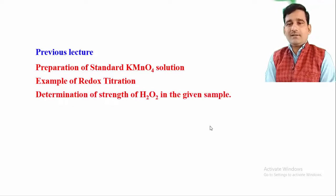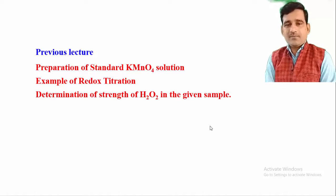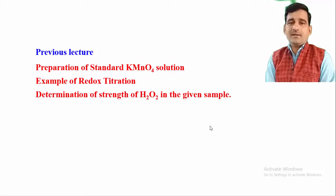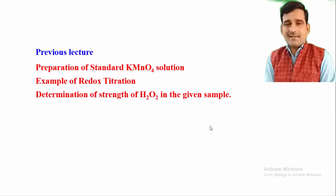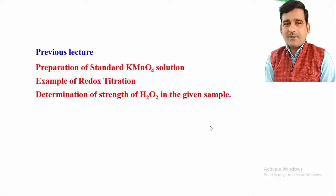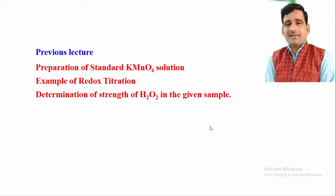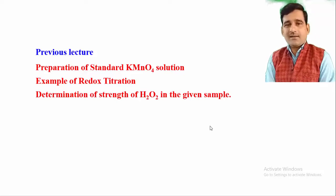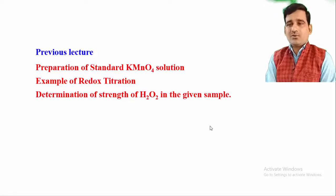In that example, we determined the strength of H₂O₂ in a given sample in terms of normality, grams per liter, and in terms of volume. We discussed the applications of redox titration: how potassium permanganate is used as a self-indicator as well as a titrant, and how to determine the strength of H₂O₂ solution.